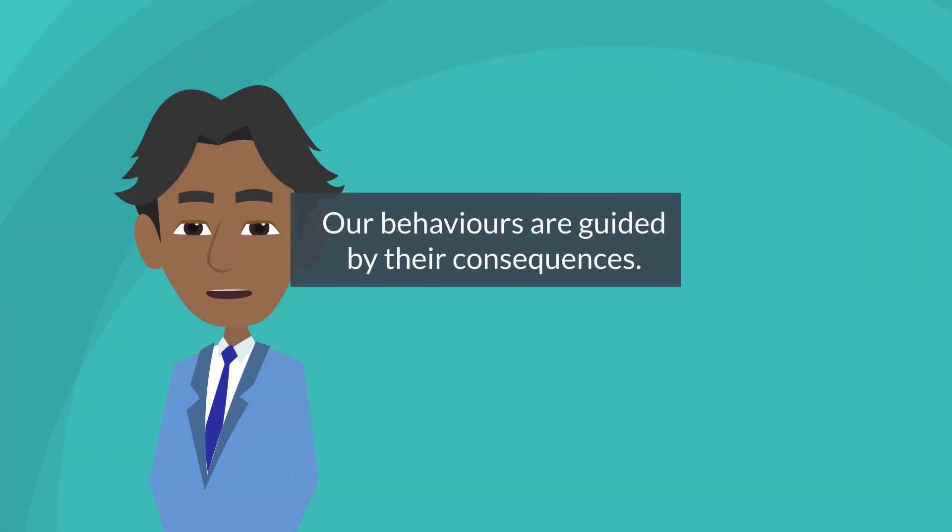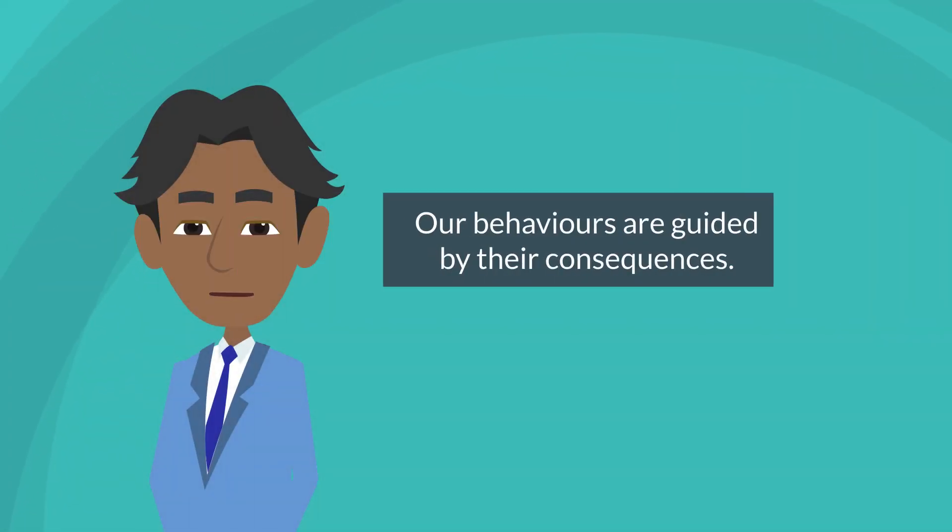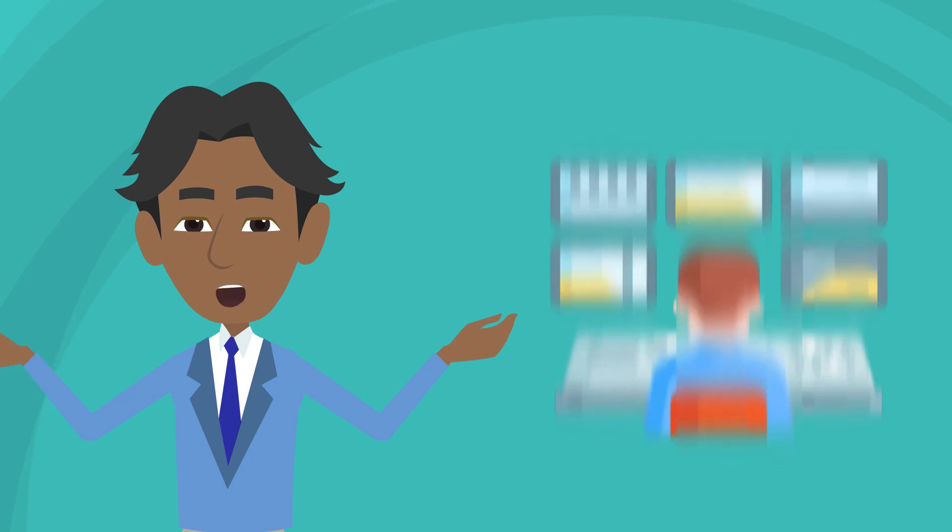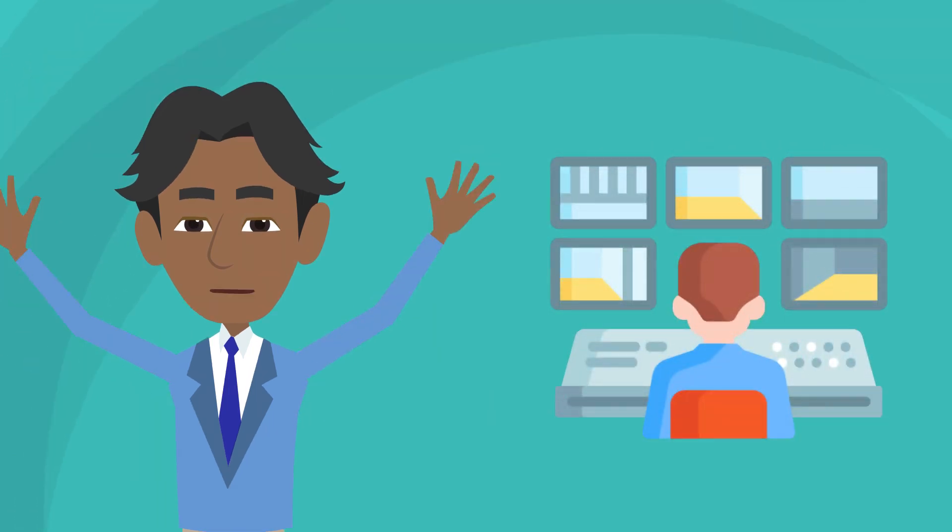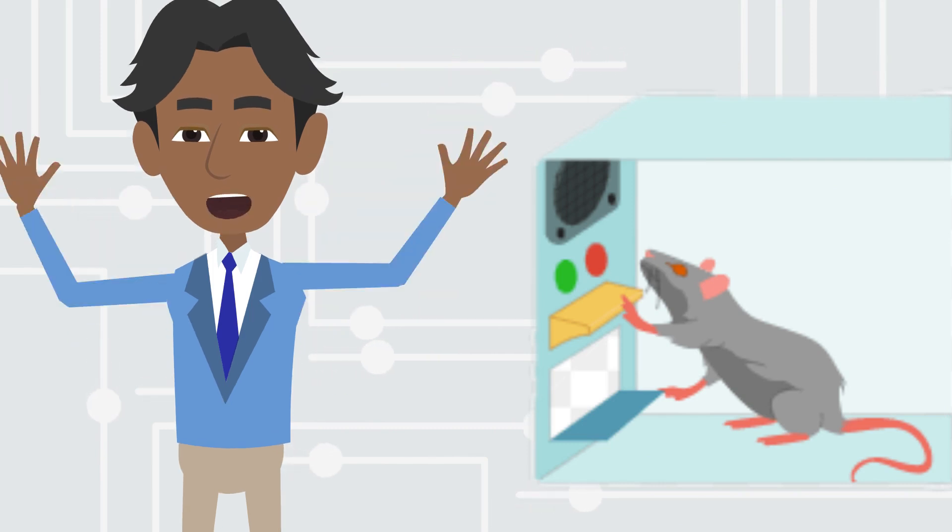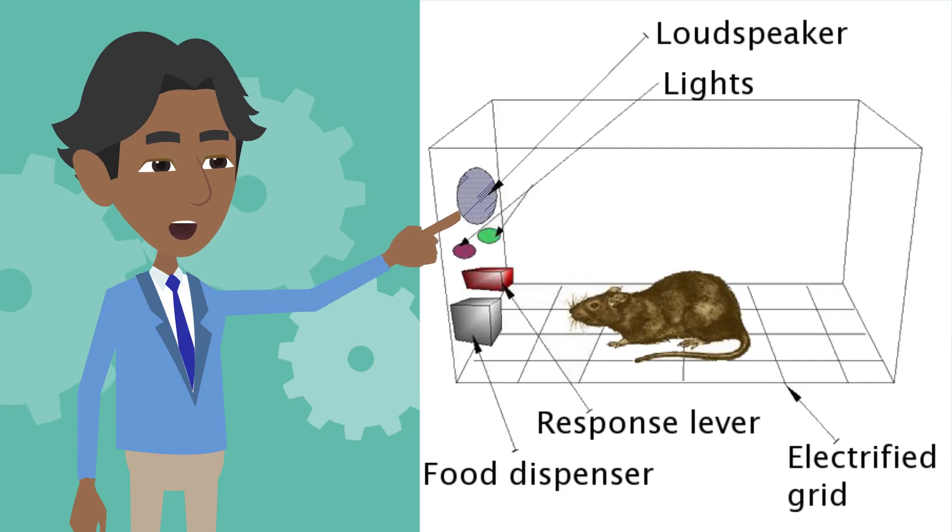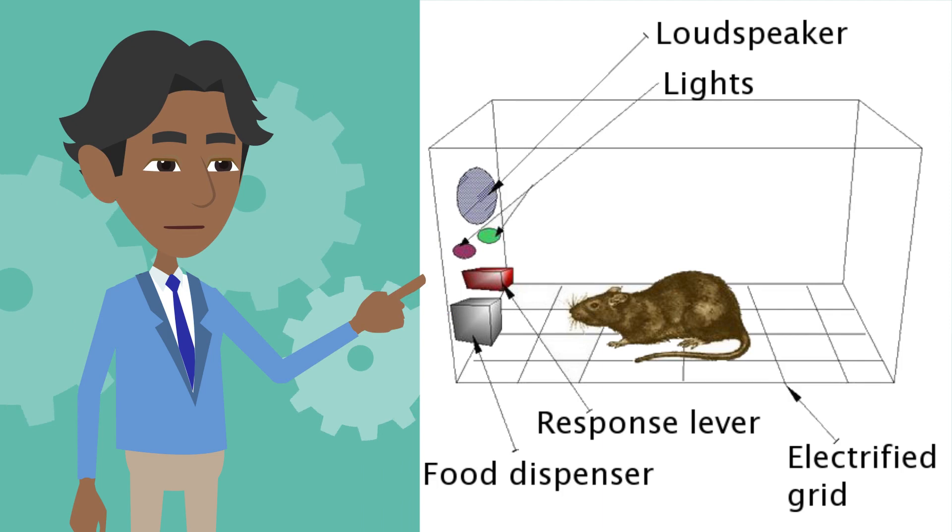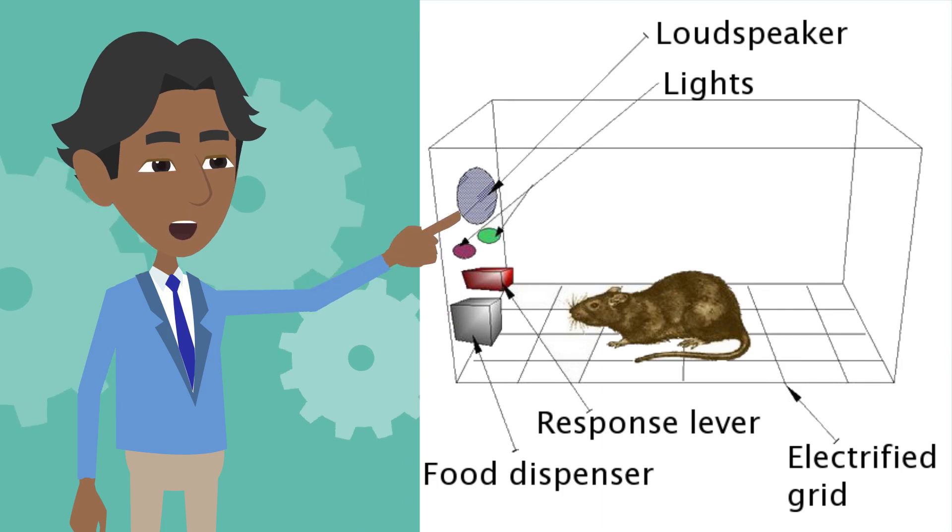Skinner's work centered on the idea that our behaviors are guided by their consequences, and he set out to study this in a controlled laboratory setting. To do so, he created a device called the Skinner Box, a small enclosed chamber equipped with a lever, a food dispenser, and sometimes a light or a tone.